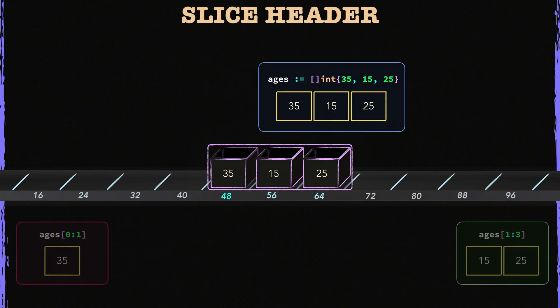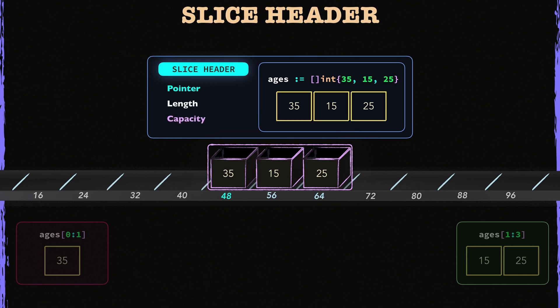As an example, here is the slice header for the blue slice. It has three fields: pointer, length, and capacity. This is what a slice value looks like under the hood. Note that a slice header is not visible to you. It is used by the Go runtime, behind the scenes. But whenever you use a slice value, you actually use this small data structure behind the scenes.